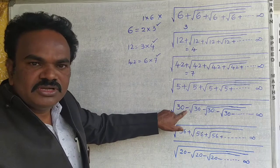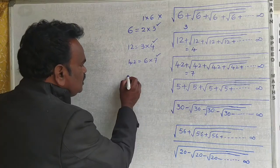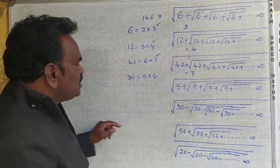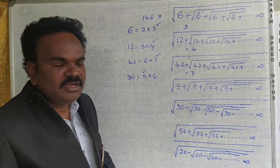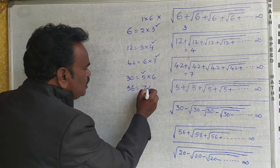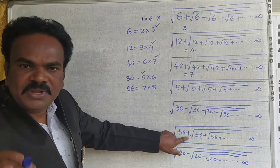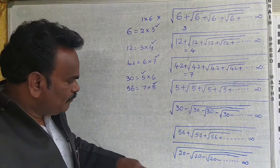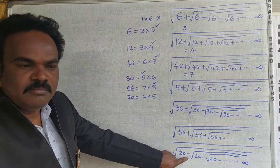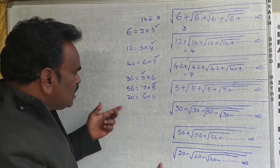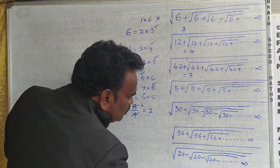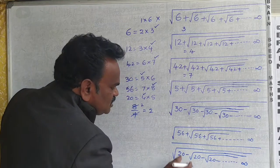Now, consider 30, but here there is a minus sign. Minus is equal to minus. You can write 30 as 5 into 6 — the product of 2 consecutive numbers. But here there is minus, so minus is the right answer. The final answer is 8 divided by 4, which equals 2. The answer is 2.